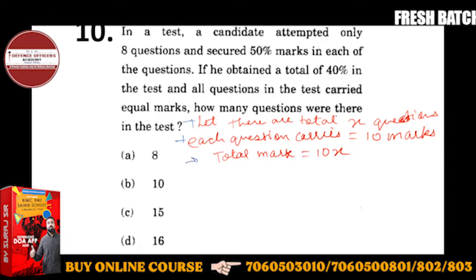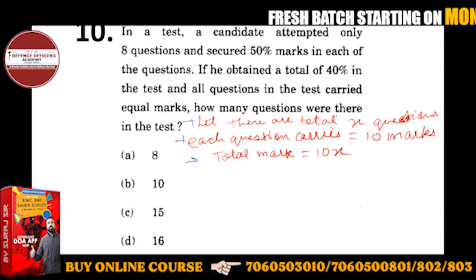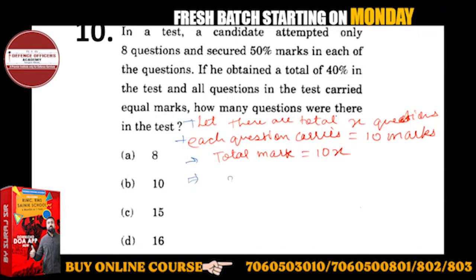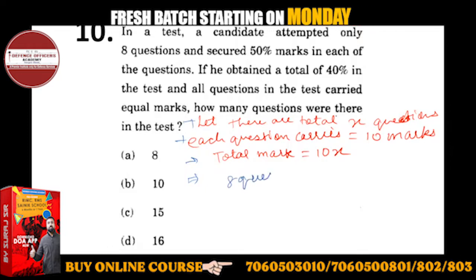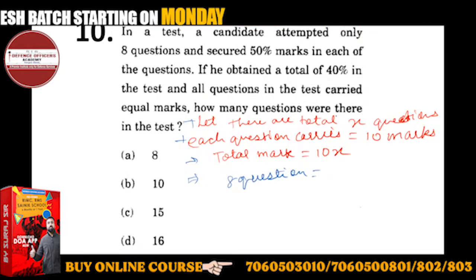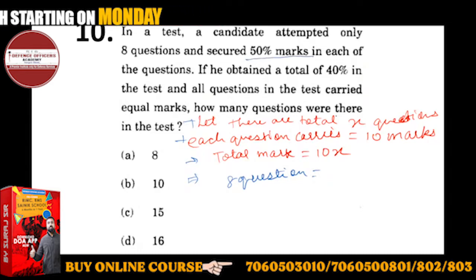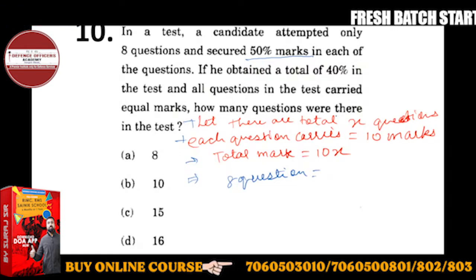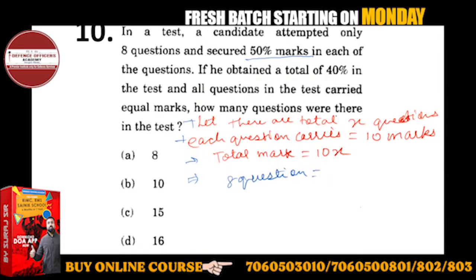Now, what is given? The candidate attempted 8 questions — he has 8 attempts, 8 questions, 10 marks each. 50% का मतलब है आधे — so in each question he gets 5 marks. तो 8 questions में इसको कितने number मिलेंगे?